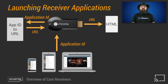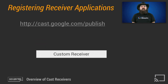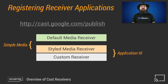Once the receiver application is loaded, you can start processing messages from the connected sender applications. As a developer, you have options when it comes to the type of receiver application launched by a sender. An application ID is a unique ID for a receiver application that you get when you register a receiver app in the CAST developer console. You can register an application ID at cast.google.com/publish. There are three types of receiver applications, two of which require registration using the CAST developer console and one that does not.